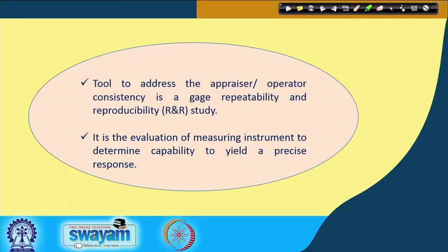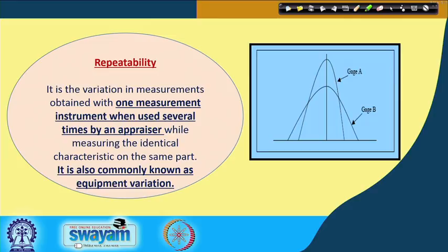Gauge R and R is a tool to address appraiser and operator consistency. It is the evaluation of a measuring instrument to determine its capability to yield a precise response. The key word here is precision — to what extent is my instrument precise is what I want to check.